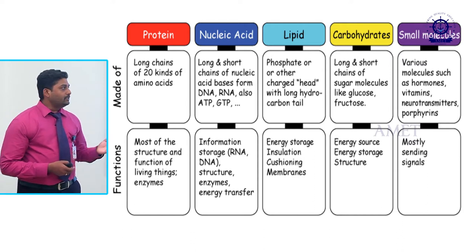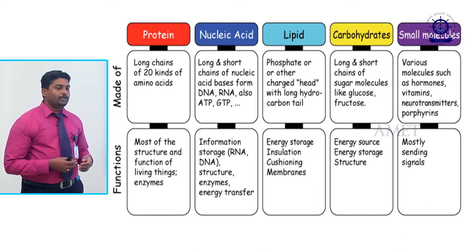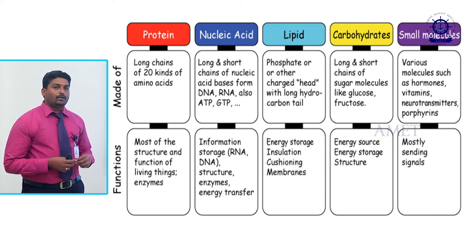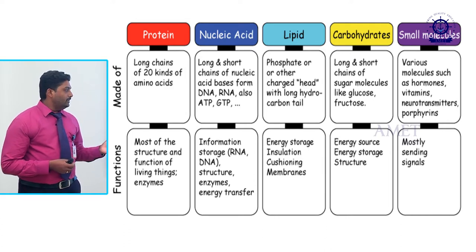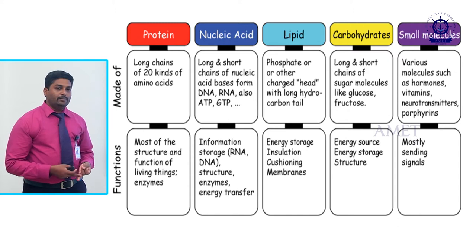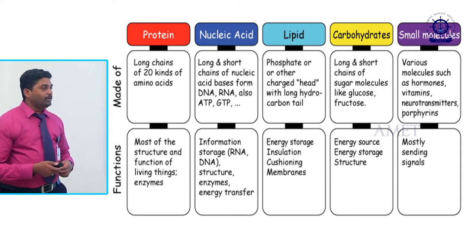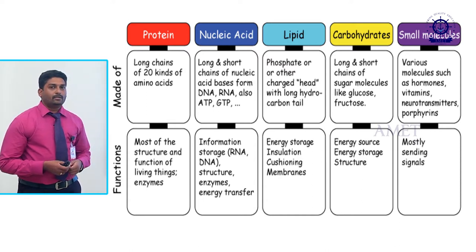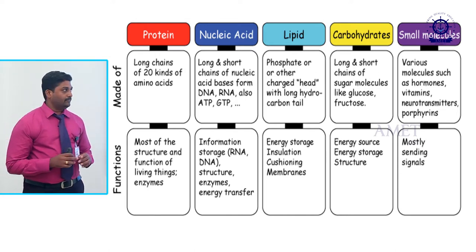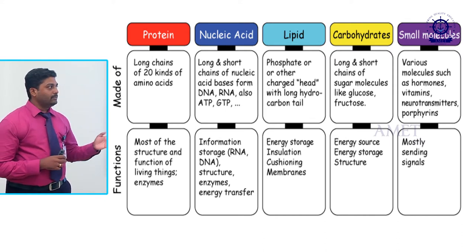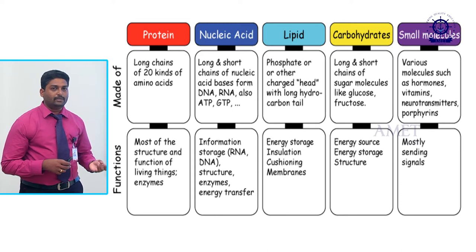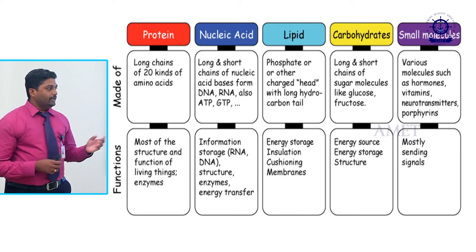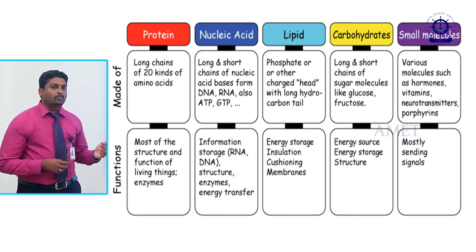Lipids are made up of phosphate or phosphodiester bonds, mostly with a hydrophobic head and hydrocarbon tail. Their functions include energy storage, insulation and cushioning membranes. Carbohydrates are long and short chains of sugar molecules; examples are glucose and fructose. Their functions include acting as an energy source, energy storage and making up proper structure. Small molecules or micromolecules include various molecules such as hormones, vitamins, neurotransmitters and porphyrins; their function is mostly sending signals.